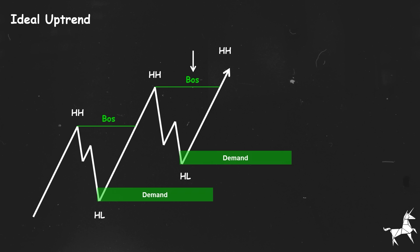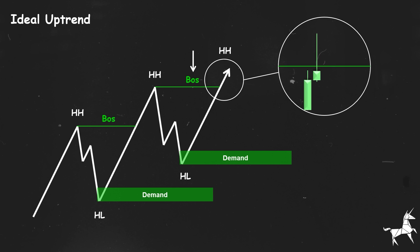This break of structure is only valid if there is a candle that clearly breaks and closes above the level. Although a wick above this high indicates that buyers were able to push the price higher, it also shows an immediate rejection back inside the range. This often resembles a liquidity grab, where stop losses are triggered for traders who went short due to the previous rejection. If we get another break with a full-bodied candle, it signals a valid breakout.